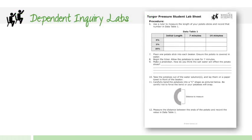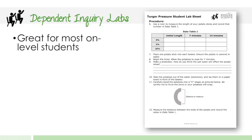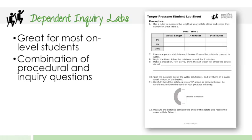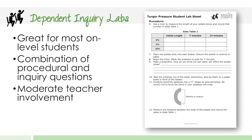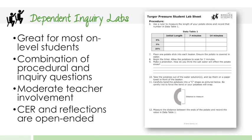Next, we're going to take a look at the leveling of the labs. We've decided to level the labs with different icons. The first level included with all of the labs is the dependent inquiry labs. These are great for most on-level students. They are going to be a combination of procedural and inquiry questions, and they're going to have moderate teacher involvement — you're still there to help, but it is a student-centered activity. The CER and reflections at the end are going to be open-ended to allow for reflection and students to get creative with their responses.